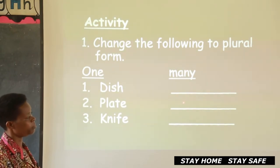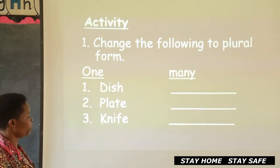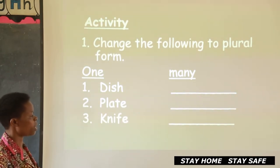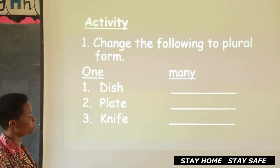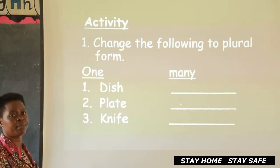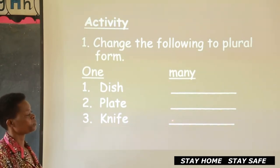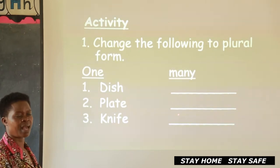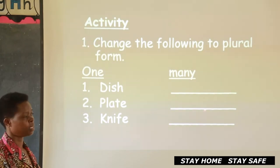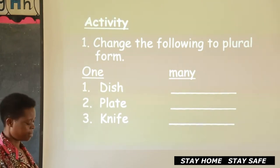The plural of plate is 'plates'. Then we have knife. This one changes the last two letters — the last two have to go away, then you put 'ves'. So knife is one; when there are many, we call them 'knives', whereby you write K-N-I-V-E-S. So you can cross-check the plural form and then we go to another number.